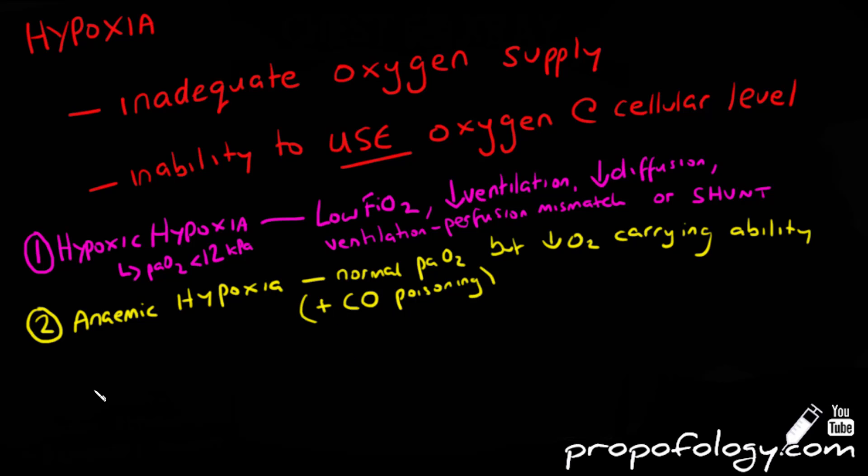So for example, if somebody had hemorrhaged out all of their blood, they actually just don't have the cells to carry the oxygen. There's not a ventilation issue, so it's not the lungs causing this, it's actually the transport issue.